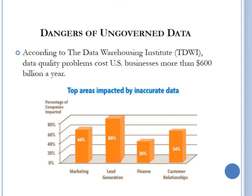According to the Data Warehousing Institute, data problems cost U.S. businesses more than $600 billion a year. Looking at the industries most impacted, 80% of companies in the lead generation industry are impacted most by dirty data — these companies sell personal data of persons to marketing companies as prospects. Companies are purchasing this data when the majority of it is compromised. Following lead generation, 66% of marketing companies are working with inaccurate, compromised data, followed by customer relationships and then finance.